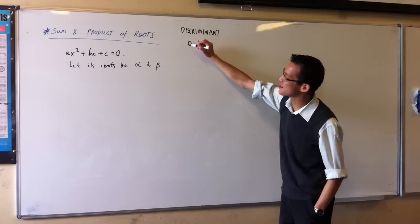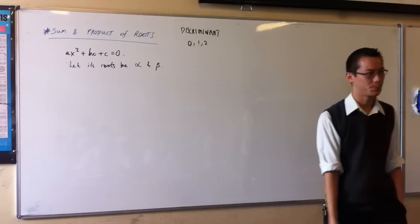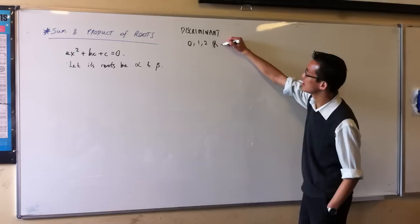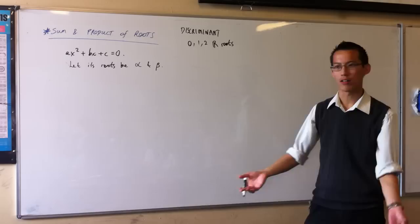A given quadratic could have zero, or one root, or two roots, right? Not quite. The discriminant says you can have zero, or one, or two real roots.